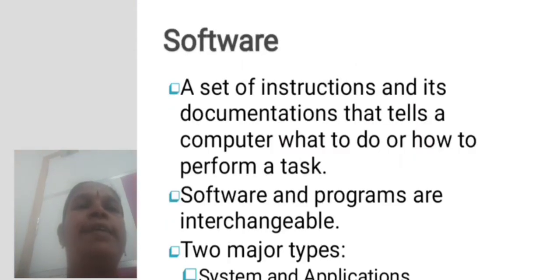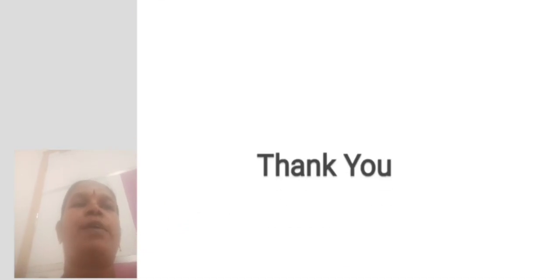Software: A set of instructions and its documentation that tells the computer what to do or how to perform a task. Software and programs are interchangeable. Two major types: System software and Application software. Thank you.